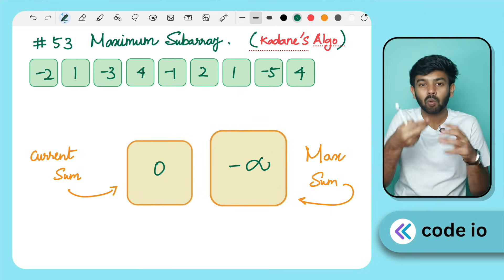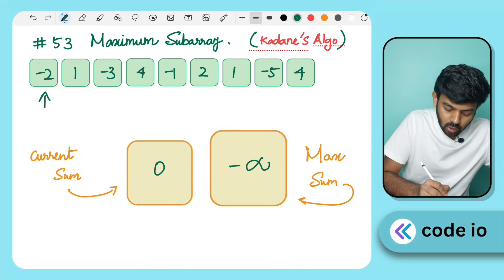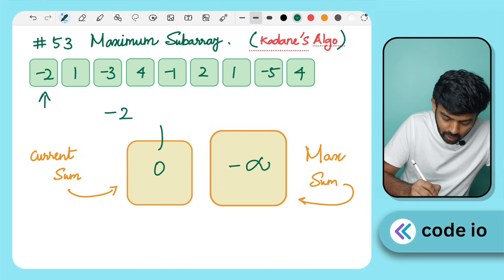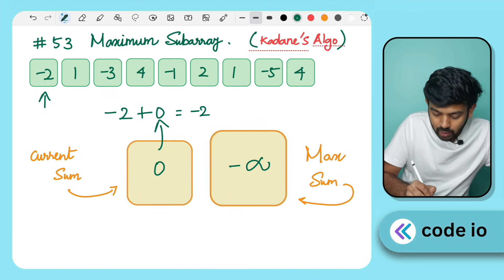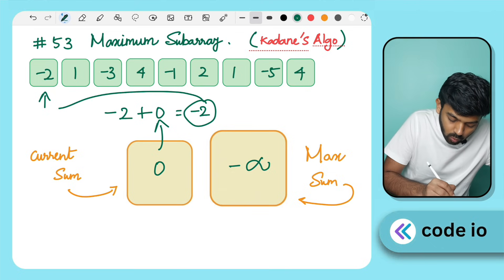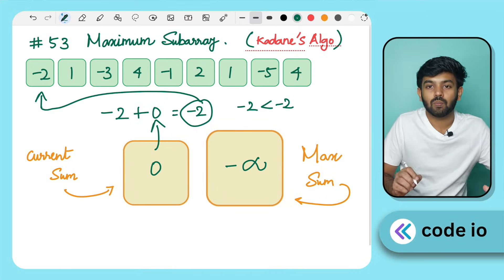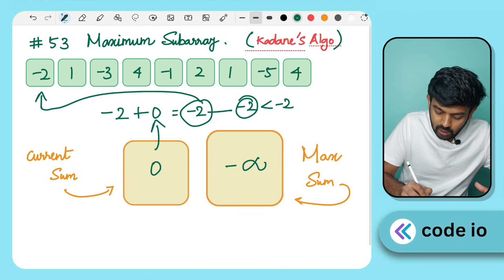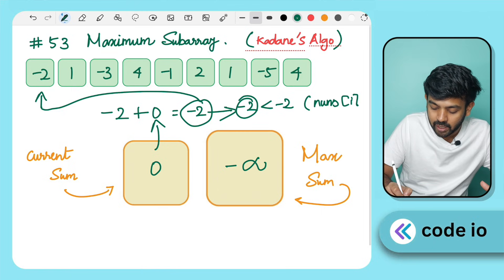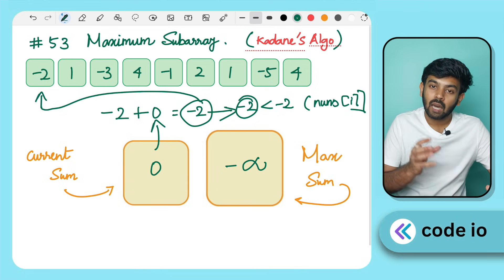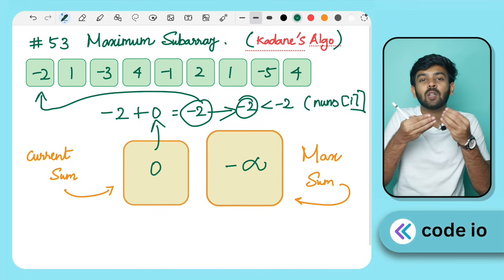We iterate through the array. At the first index, we add the value minus 2 to CurrentSum. CurrentSum is 0 plus minus 2, so it becomes minus 2. We then compare: if the current sum is less than the current element nums[i], we can discard the previous sum.